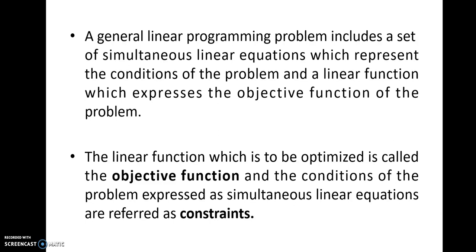In linear programming, there are three types of equations. The first is the objective function. It consists some constraint equations. And next is the non-negative restriction, that is all the variables should be positive. The linear function which is to be optimized is called the objective function. Which we have to optimize, we have to find the best solution, that is known as the objective function. And the condition of the problem expressed as simultaneous linear equations are referred as constraints.